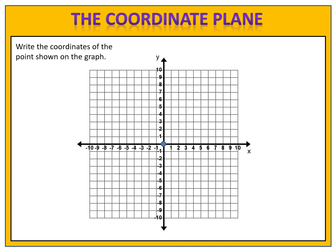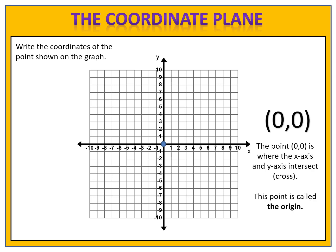Here's an interesting one. Can you write the coordinates of this point where the x and y-axis intersect? Pause the video and write down what you think the coordinates are. It turns out that both x and y are 0. This is the point 0 comma 0 — where the x and y-axis intersect. This point has a special name, called the origin.